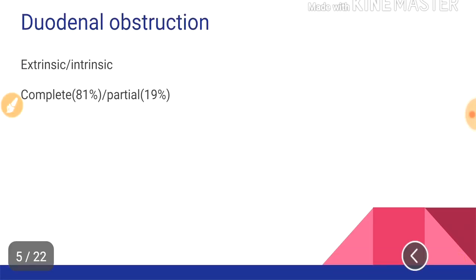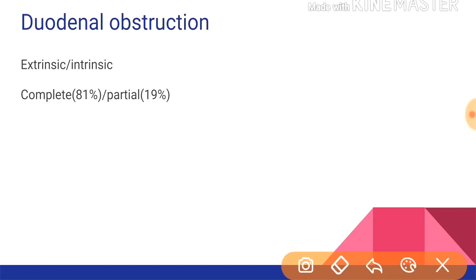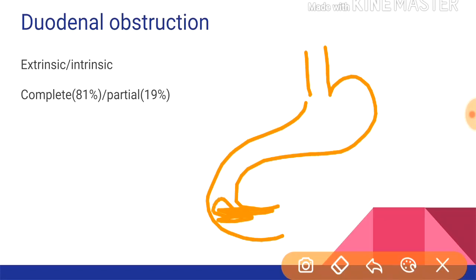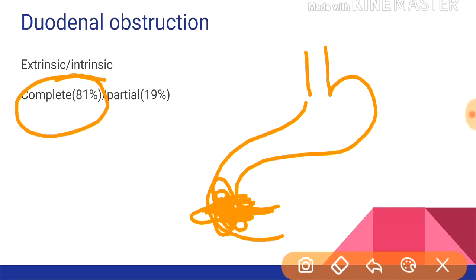Coming to duodenal obstruction per se. Duodenal obstruction can be either intrinsic or extrinsic, and it can be a complete or a partial obstruction. Intrinsic obstruction is an obstruction inside the lumen of the duodenum — some problem with the duodenum itself. An extrinsic obstruction is caused by some outside structure, like annular pancreas or Ladd's band. The obstruction is generally complete in 81% of patients and partial in 19%, with complete obstruction presenting early and partial obstruction presenting late.